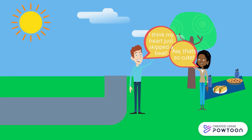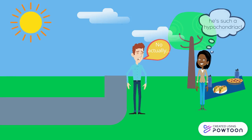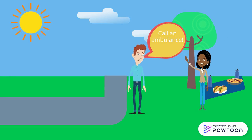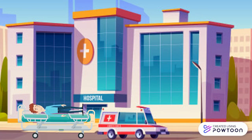Little does she know, Bob was dead serious — but she thinks he's notoriously a hypochondriac. But Bob insists on going to get checked out. Worried, the date calls 911. Bob arrives at the hospital, worrying if he's going to be okay.